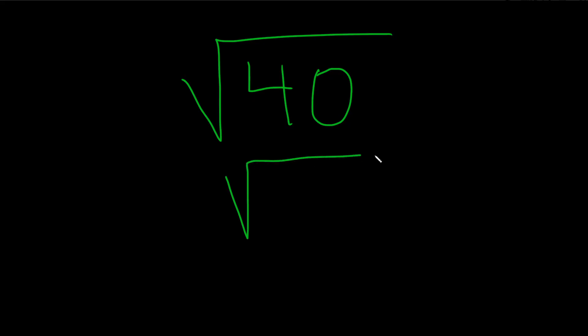The first step is to write this as 4 times 10. Next step is to actually just break this up into two square roots. This is the square root of 4 times the square root of 10.